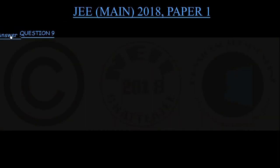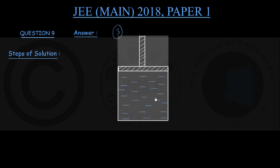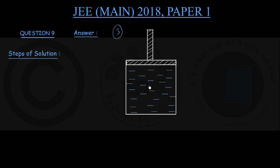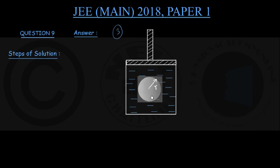For question number nine, the correct option is option three. To show how we got there, let me show some steps of the solution. First, a diagram of the situation: we see a cylindrical container having some liquid with a piston whose cross-sectional area matches that of the cylinder, floating on top. Here is a solid sphere of radius R immersed in the liquid — a soft material of bulk modulus K.